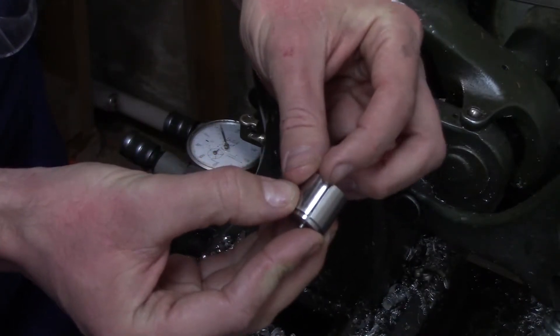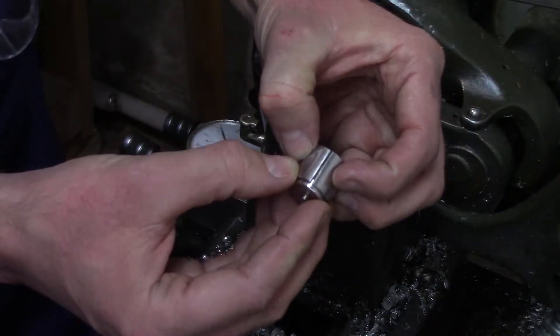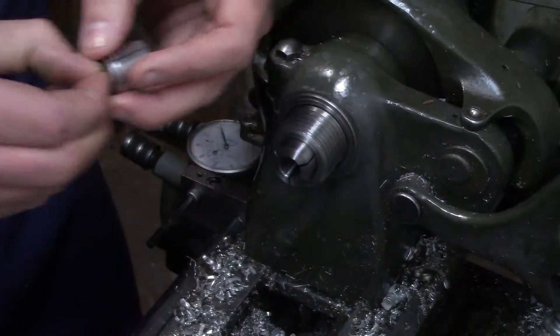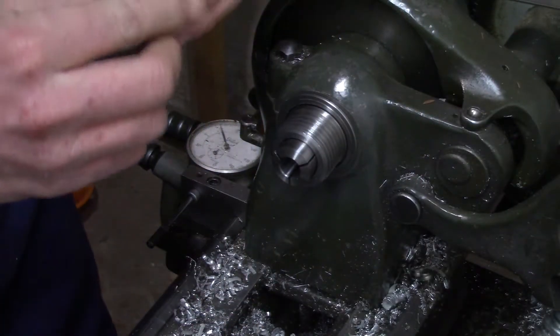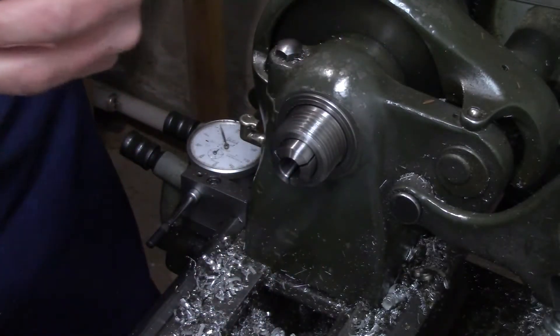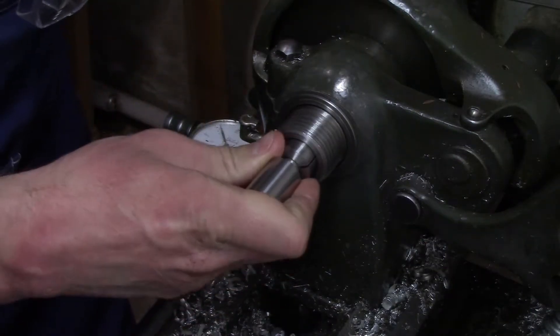and then cut a slit along the side, so that when you clamp this down in the three jaw, the collet will clamp down on the crank disc and hold it in place. Now, we do need to be able to take this out, measure it, and then put it back in.